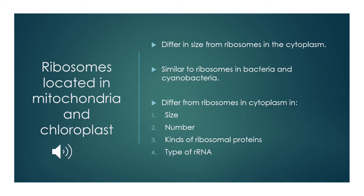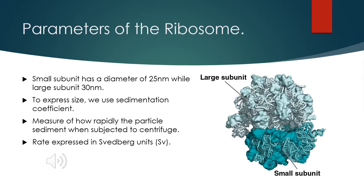The main differences are in size, number, kinds of ribosomal proteins, and types of ribosomal RNA. If we look more closely, we can divide the ribosome into two subunits, called the large subunit and small subunit, which are 30nm and 25nm respectively. A better way to express the size is using the sedimentation coefficient, expressed in Svedberg units — measured by observing how rapidly particles sediment when subjected to a centrifuge.